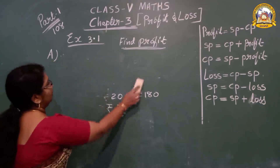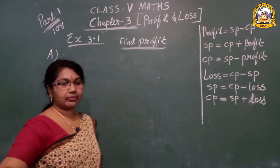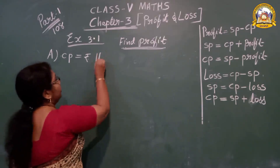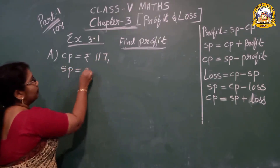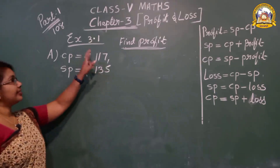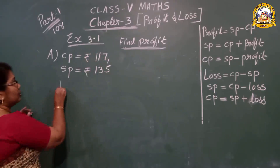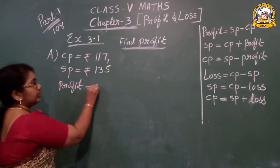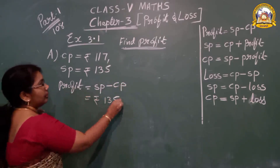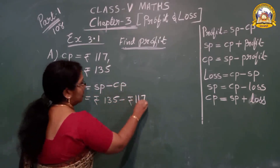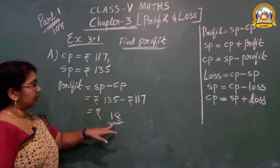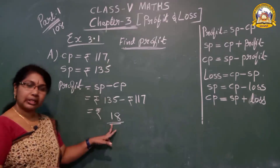Second question: CP is equal to rupees 170, and SP is equal to rupees 135. SP is less than CP. Find the profit. So profit is equal to — using the formula Selling Price minus Cost Price — rupees 135 minus rupees 117. 15 minus 7 is 8, 2 minus 1 is 1, so that is 18 rupees. What is the profit? Only 18 rupees.